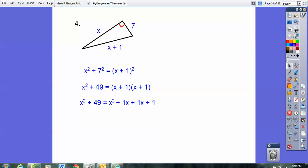Outer times outer, inner times inner, last times last. And then I'll combine like terms there on the right. And now the x squareds will cancel, so I'm just left with 49 because I subtracted x squared from both sides. 49 equals 2x plus 1, then subtract 1, you get 48, divided by 2, you get x equals 24.